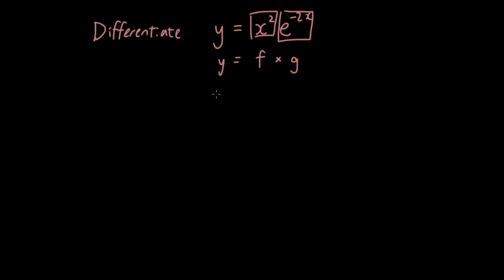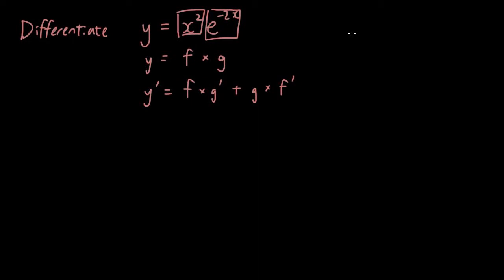Using the product rule, we have y dash equals f times g dash plus g times f dash. So that is the product rule and we're going to do that on this function. So we have f is equal to x squared. Now we're going to differentiate this first function. x squared differentiates into 2x.